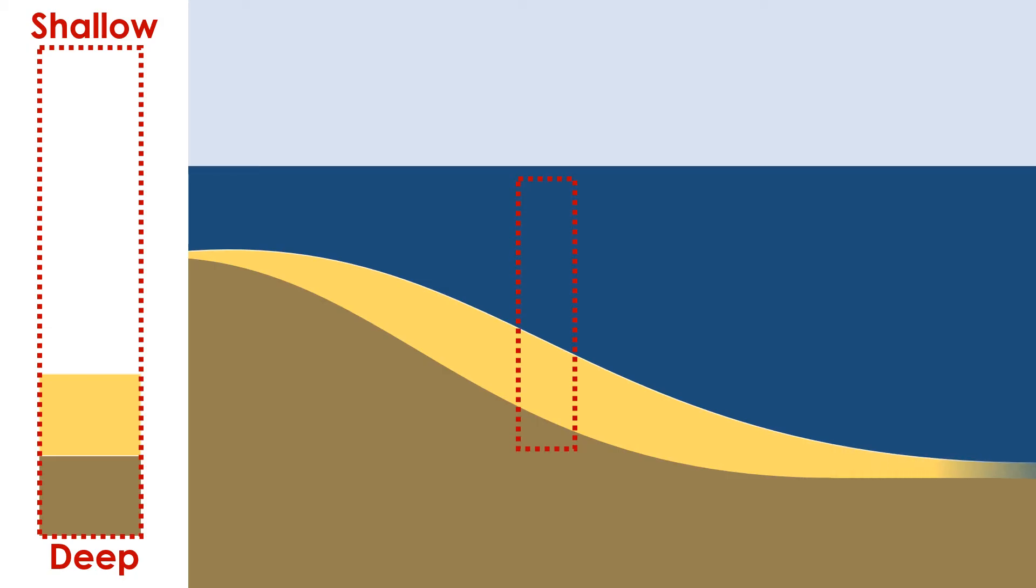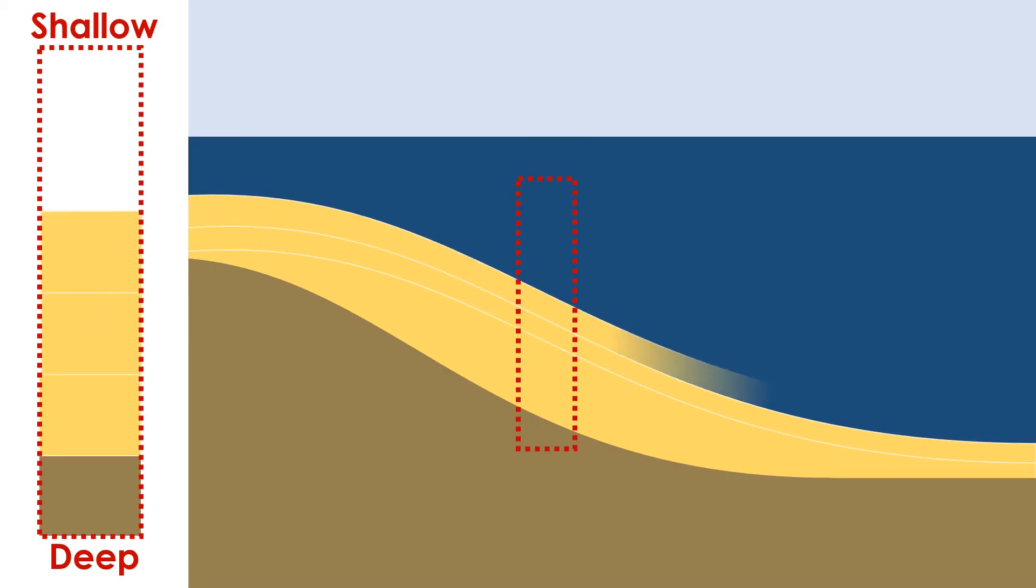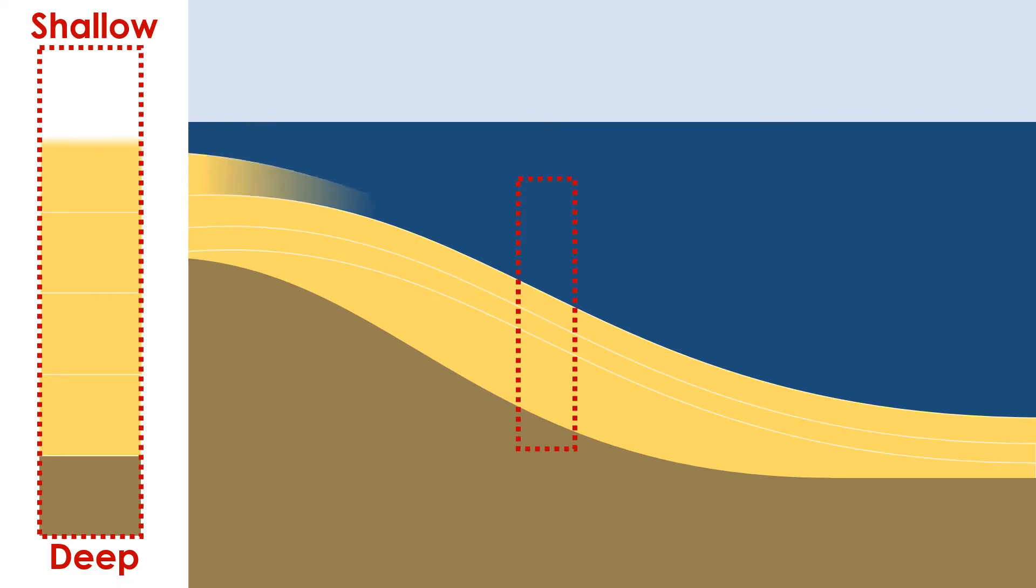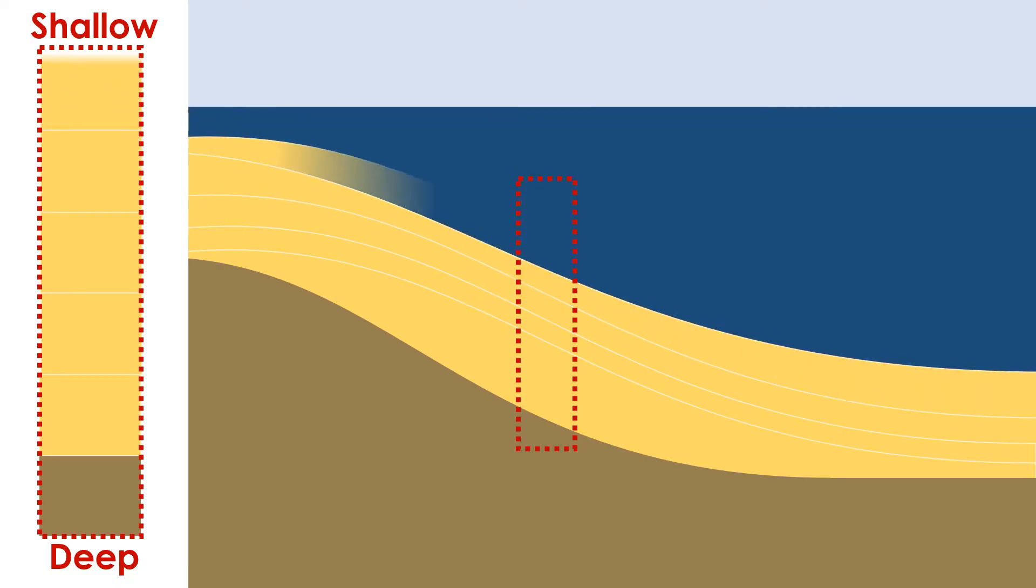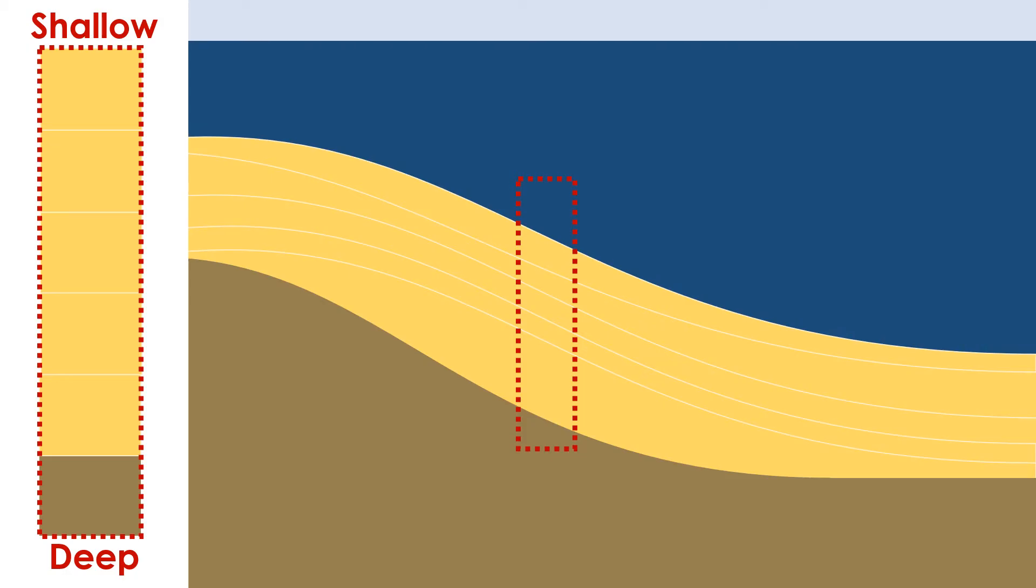Under certain conditions, the sediment supply rate is balanced by the creation of accommodation space. These somewhat rare circumstances result in sedimentary logs and stratigraphic columns that neither shallow or deepen upsection. We refer to this sort of facies succession as aggradation.